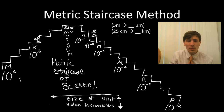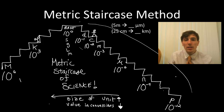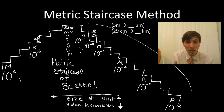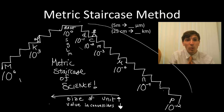Let's say a problem says you take a measurement of five meters and you want to convert that to micrometers. On the right side of this staircase, all the units represent measurements that are smaller than the base unit. A centimeter is a hundredth of a meter. A millimeter is a thousandth — ten to the negative third — of a meter.